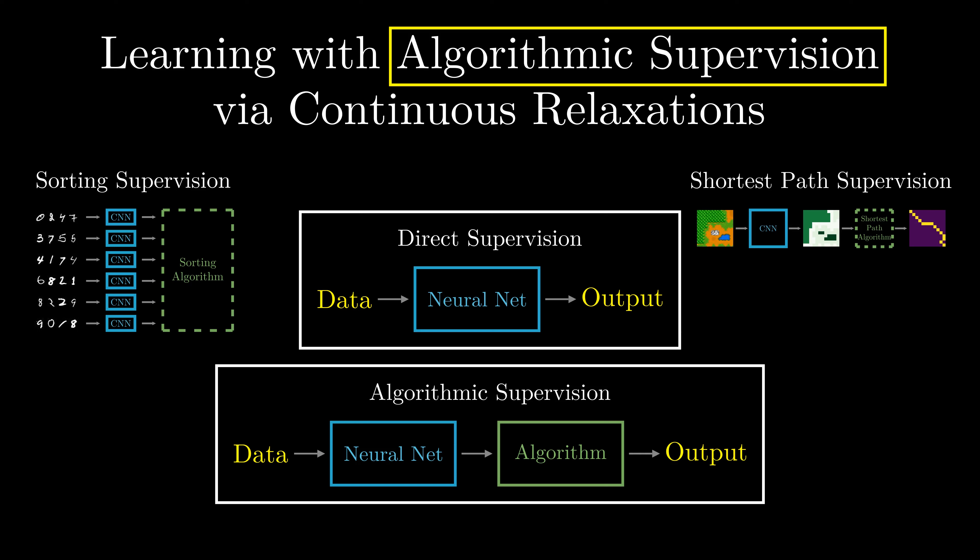Algorithmic supervision can be seen as an encoder-decoder architecture where the encoder is a neural network and the decoder is an algorithm.